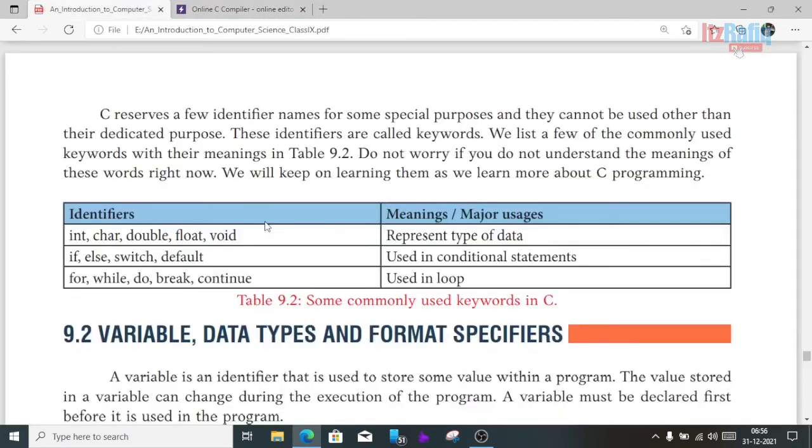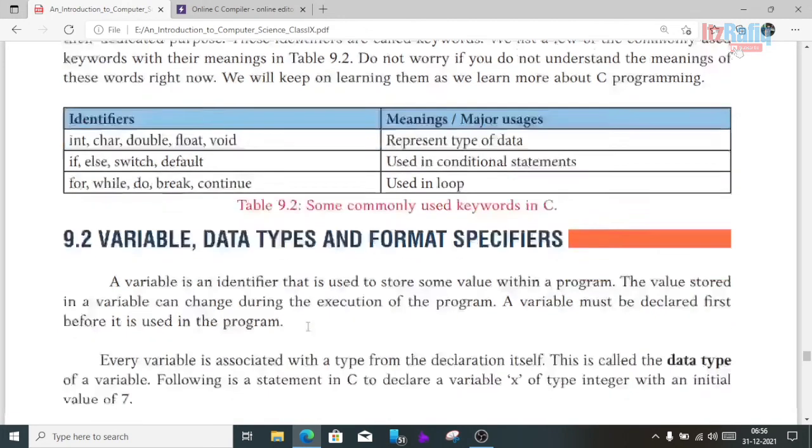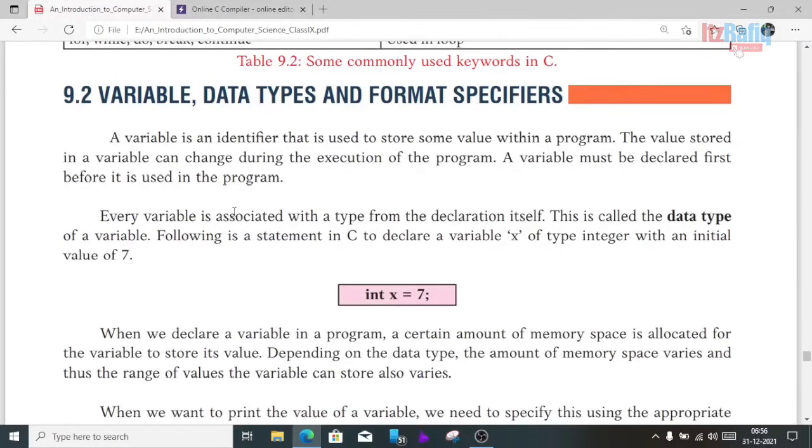Now let's discuss variables, data types, and format specifiers. A variable is an identifier that is used to store some value within the program. The value stored in a variable can change during the execution of the program. A variable must be declared first before it is used in the program. If you write a program, you need to store some values, and the provision to store these values is called a variable.